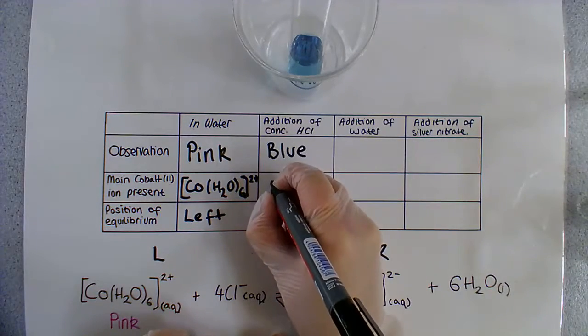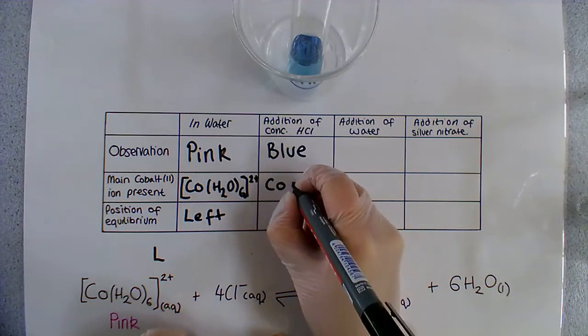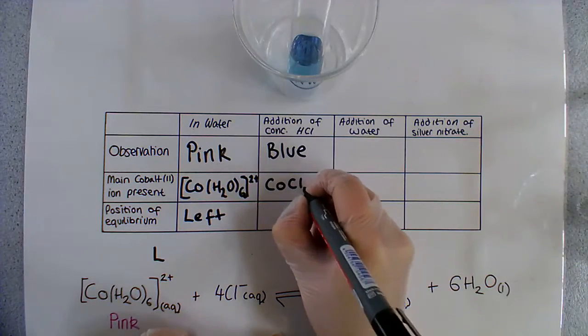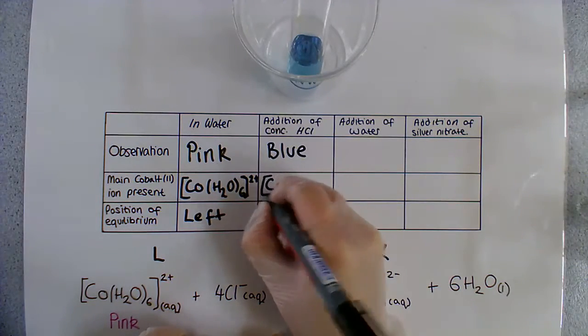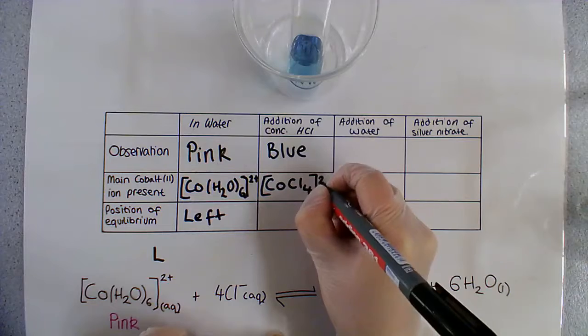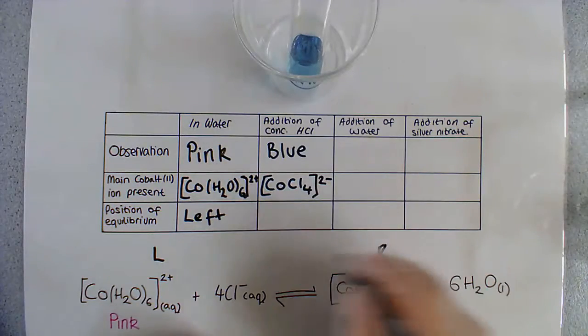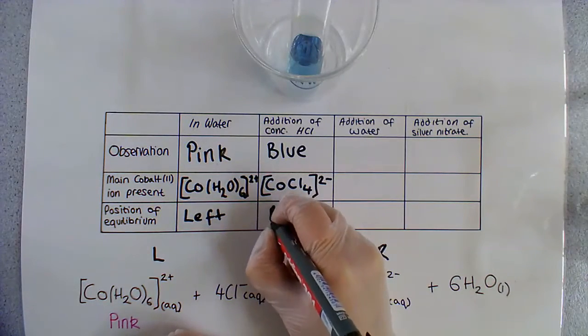And our main ion is now the cobalt(II) chloride ion. So what we can say is the equilibrium has shifted to the right-hand side.